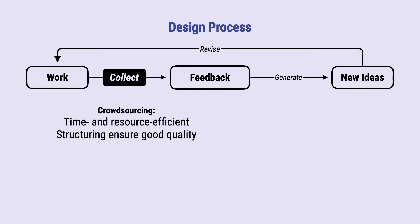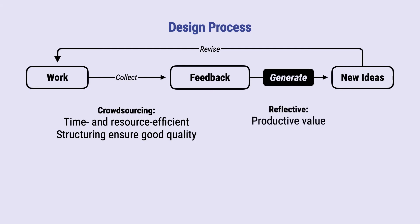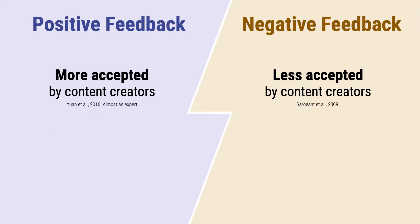Crowdsourcing is a promising approach to collect large amounts of feedback quickly. And when structured appropriately, crowdsourced feedback can be of good quality. However, in order for crowdsourced feedback to be effective, it needs to promote valuable reflection and it needs to have appropriate sentiment to be acceptable. And while this might sound trivial, it turns out that there is a tension between the acceptability of feedback and its productive value, which is related to the sentiment.